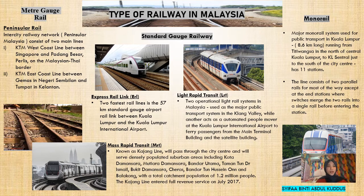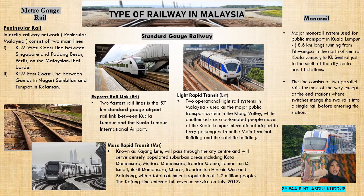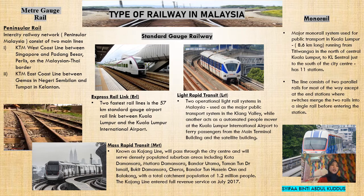The second type is Standard Gauge Railway. The first is Express Rail Link, ERL — the two fastest rail lines, covering the 57 km Standard Gauge Airport Rail Link between Kuala Lumpur and Kuala Lumpur International Airport. The second is Light Rapid Transit, LRT, with two operational light rail systems in Malaysia used as the major public transport in the Klang Valley. The last is Mass Rapid Transit, MRT, known as the Kajang Line, which passes through the city centre and serves densely populated suburban areas, with a total catchment population of 1.2 million people, entering full revenue service in July 2017.